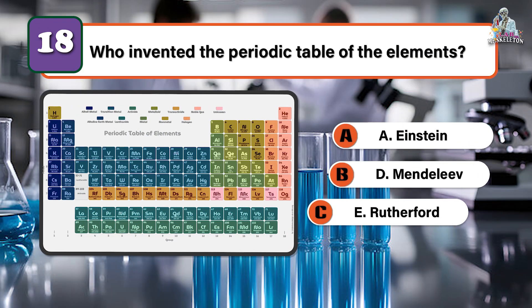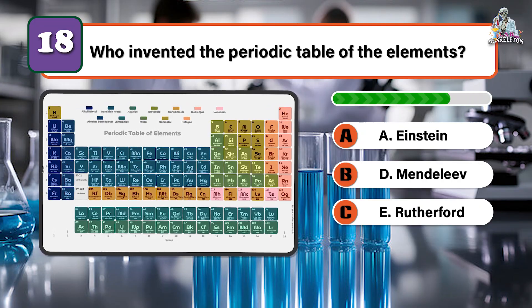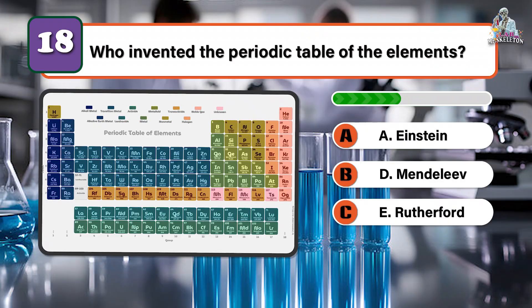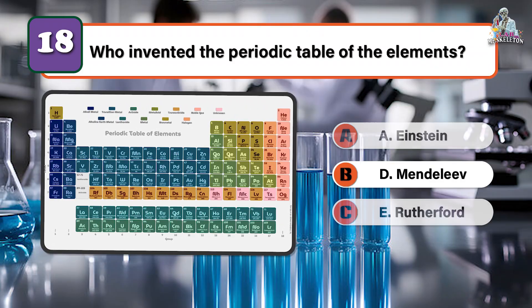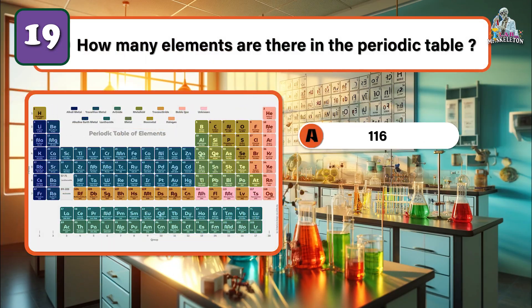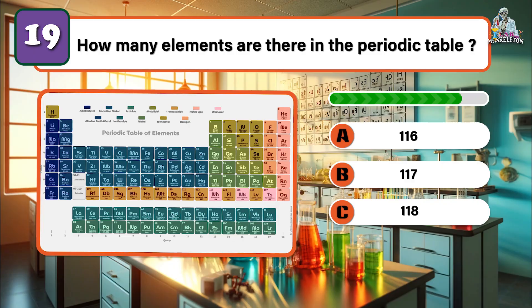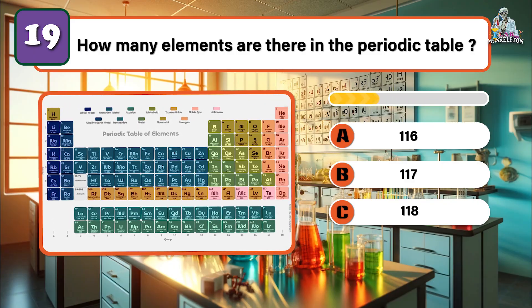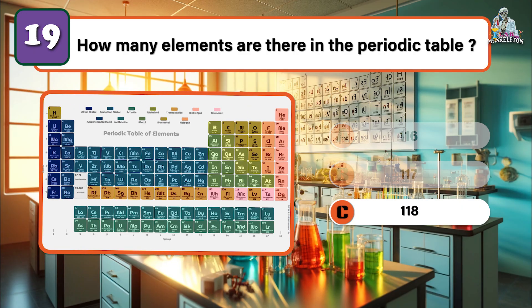Who invented the periodic table of elements? Dmitry Mendeleev, a Russian chemist. How many elements are there in the periodic table? One hundred eighteen elements.